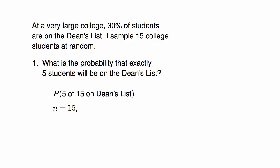I'll need the number of trials, which is n equals 15, the number of students who satisfy the condition, which is x equals 5, and the probability a random student satisfies the condition, which is 0.3.